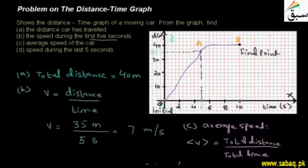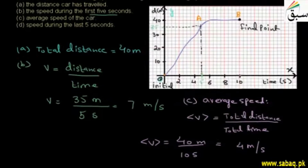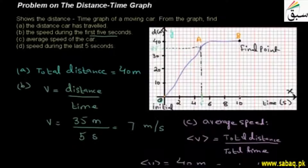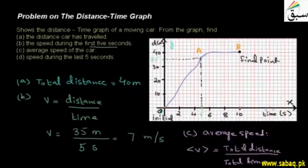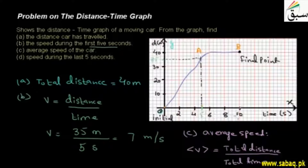After that, the last question is the speed during the last 5 seconds. In the last 5 seconds, if you do 10 minus 5, you get 5 seconds. So you have to look from the 5-second mark to the 10-second mark on the graph.